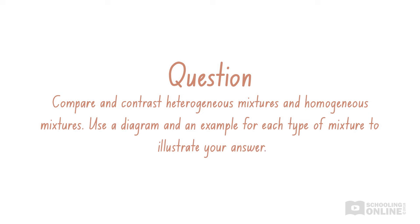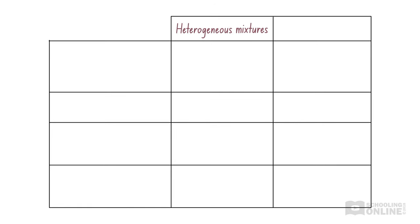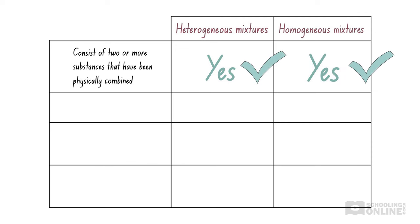Pause here to think about what you could include. The key verbs used in this question are compare and contrast. This means we should state the similarities and differences between these two types of mixtures. Heterogeneous and homogeneous mixtures both consist of two or more substances that have been physically, and not chemically, combined. In addition, heterogeneous and homogeneous mixtures can both be physically separated.